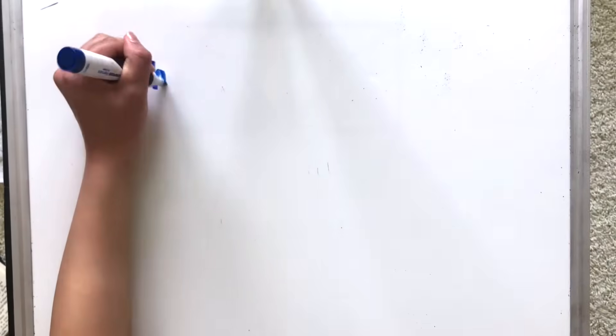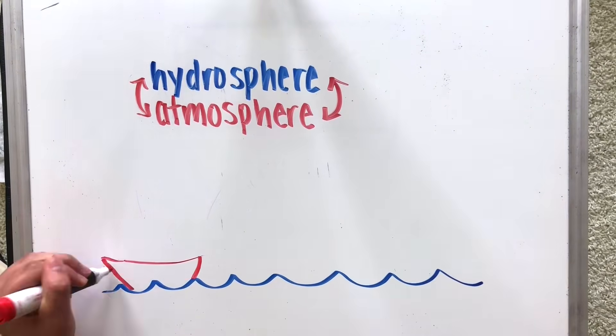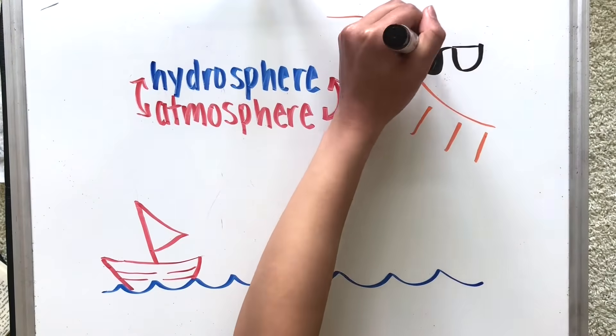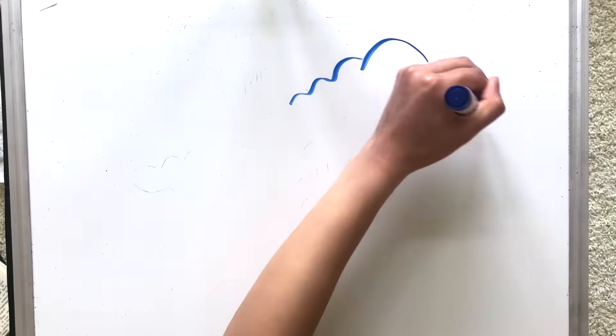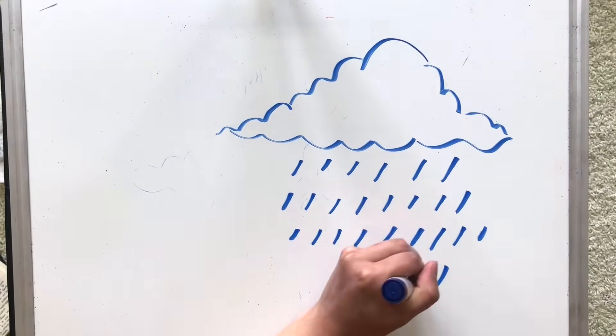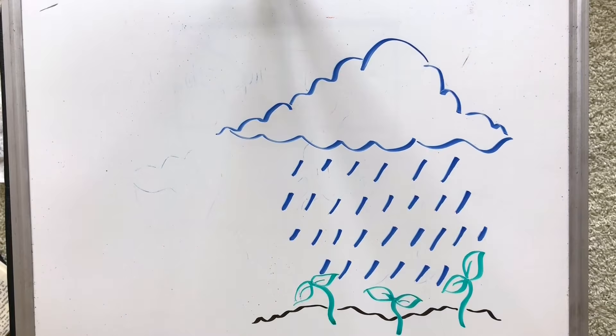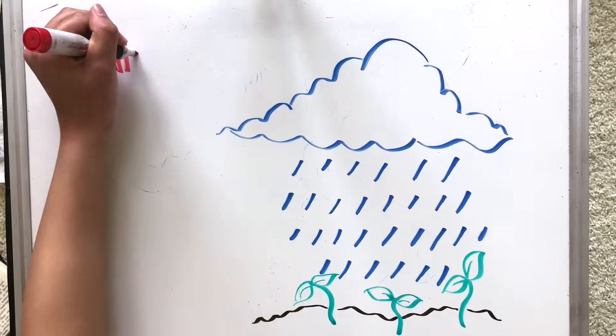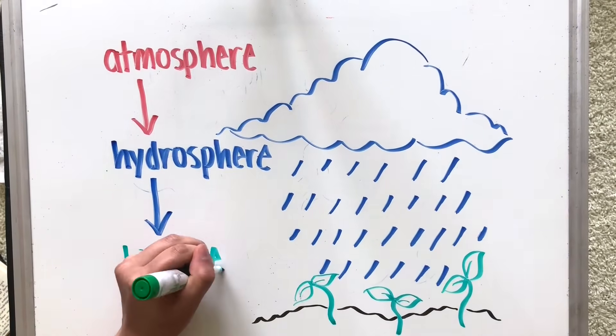Let's begin by reviewing water in an interaction between our hydrosphere and atmosphere. When water evaporates from our ocean, it enters the atmosphere, where it condenses around dust particles to form clouds, eventually falling back down as rain. This water can then fall back down and water our plants, thus marking an interaction between the hydrosphere and the biosphere.